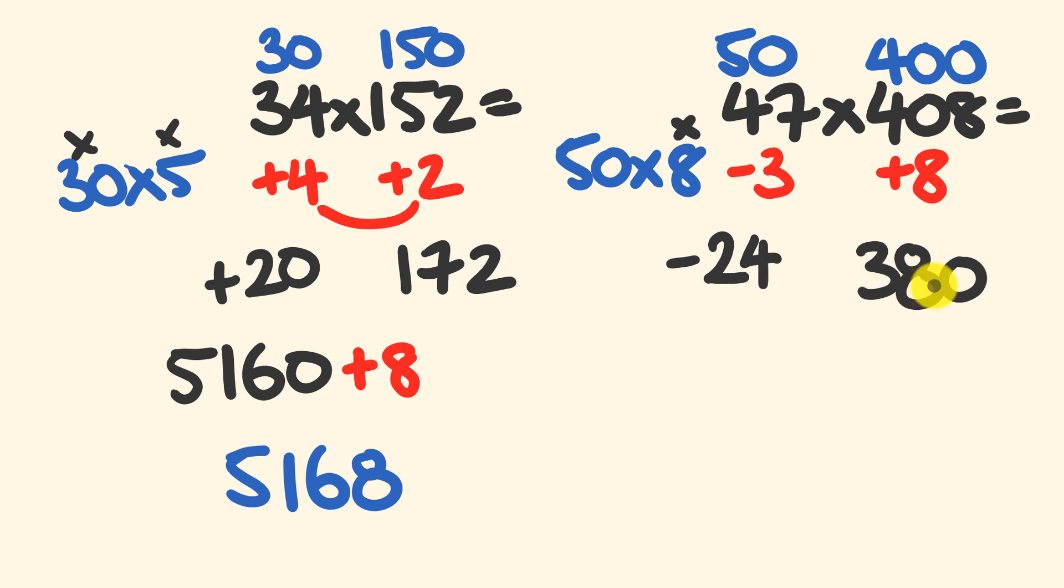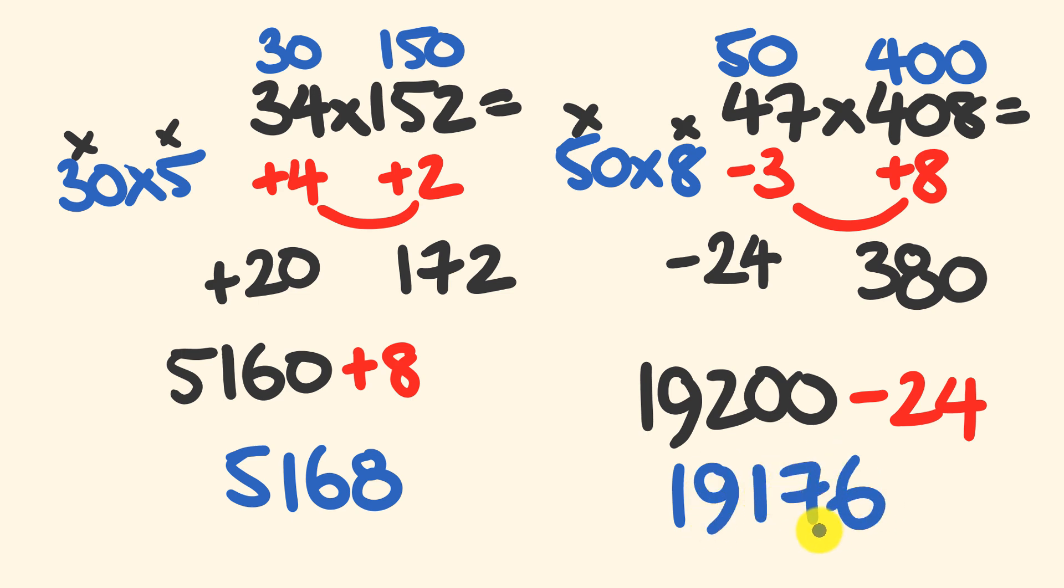Finally we're going to multiply our 380 by 50 to get the tens part of our answer. 380 times 50 the answer is 19,200. Finally what we do to get our units part is we multiply positive 8 multiplied by negative 3 which gives us an answer of negative 24. So we're going to take 24 off. We get our final answer now 19,200 take away 24. We get the answer of 19,176.